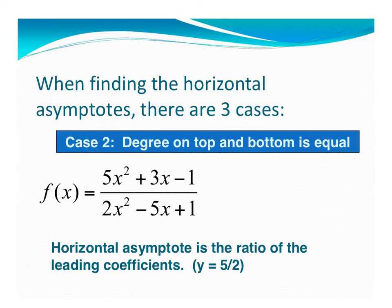In case number 2, the degrees in the numerator and denominator are the same. Here we have x squared and x squared. When this is the case, we look at our leading coefficients in front of those highest degree terms. We have a ratio, so we get y equals 5 over 2.